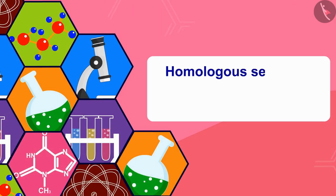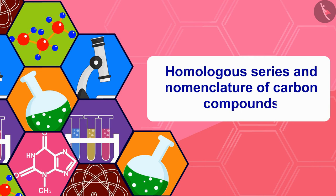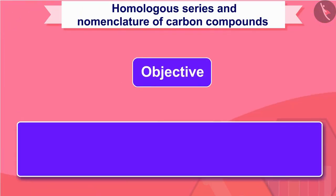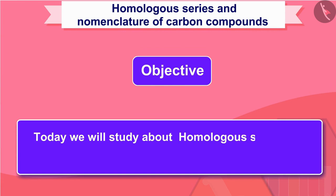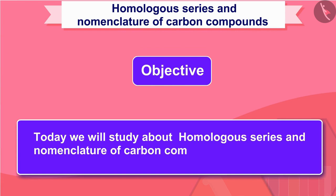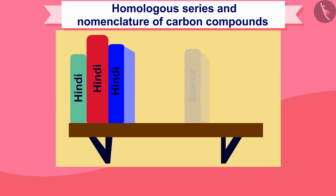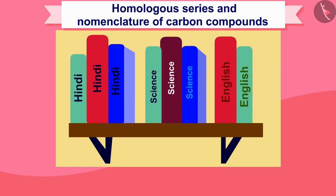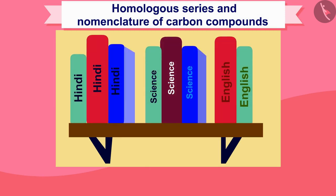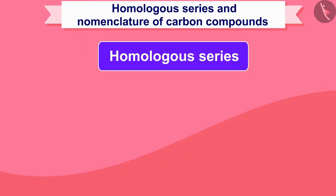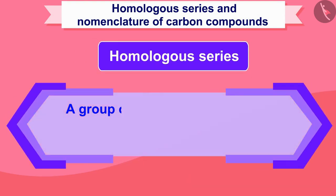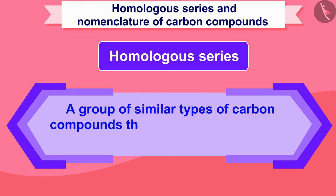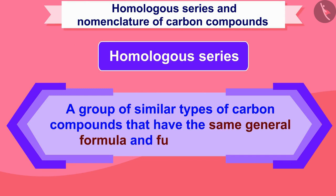Hello friends, welcome to this video. Today we will study about homologous series and nomenclature of carbon compounds. Homologous carbon compounds can be defined as a group of similar type of carbon compounds that have the same general formula and functional group.